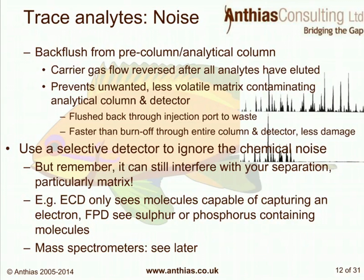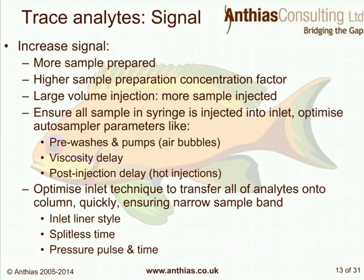To increase signal, we can prepare more concentrated samples, use a higher sample preparation concentration factor, or do a large-volume injection into the GC inlet. Optimize autosampler parameters like pre-washes and pumps to remove air bubbles, add a viscosity delay, and use a post-injection delay for hot injections with high molecular weight compounds. Optimize the inlet technique to transfer all analytes onto the column quickly, making a narrow sample band for sharp peaks — selecting the appropriate inlet liner style, optimizing the split ratio, and optimizing any pressure pulse and pulse time.